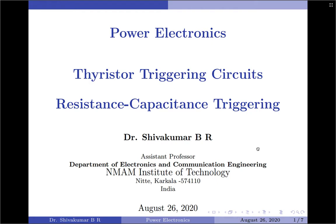This is because the supply voltage is maximum at its 90 degree point and the gate current has to reach IGT, which is the gate threshold current, somewhere between 0 to 90 degrees. This limitation means that the load voltage waveform can only be varied from alpha equals 0 degree to alpha equals 90 degrees. Those were the disadvantages of the resistance triggering technique.